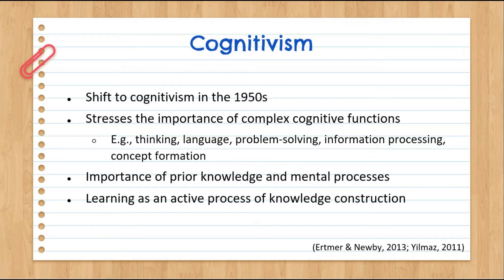What are the actual mental processes at work? We saw a shift away from the emphasis on overt observable behaviors seen in behaviorism. Instead, educators and psychologists began to stress the importance of complex cognitive functions — for example, thinking, language, problem solving, information processing, and concept formation.